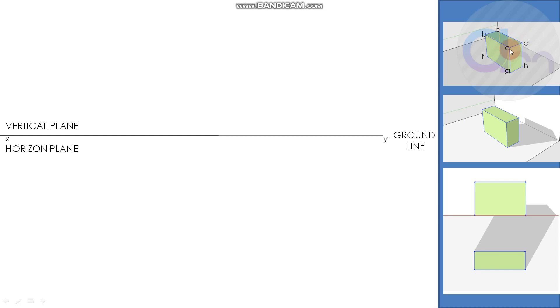The block is called A B C D E F G H. Let's draw the block. This is the plan, the top view, and this is the front view, the elevation. This part is B C F G, and this part A B C D.